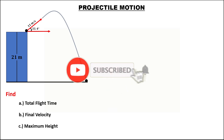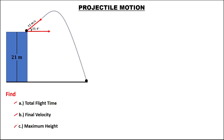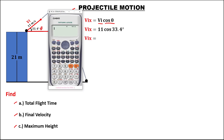For this problem, we need to find the total flight time, the final velocity, and the maximum height. In projectile motion, first we need to solve the initial velocity for x. Using this formula, the initial velocity equals 11 times cosine theta, and theta is 33.4. So we have 11 times cosine 33.4, which equals 9.18.